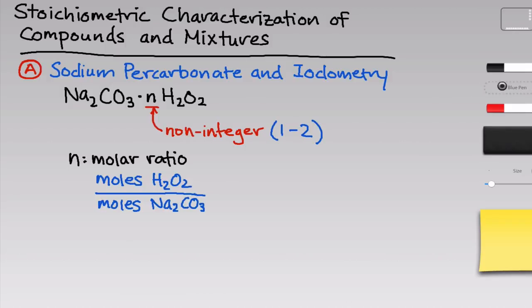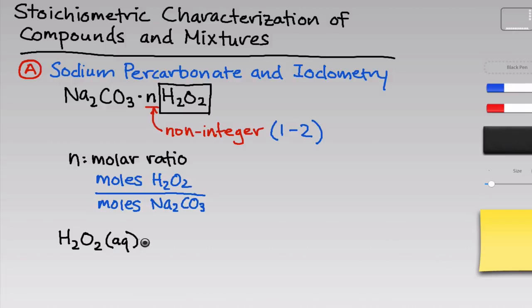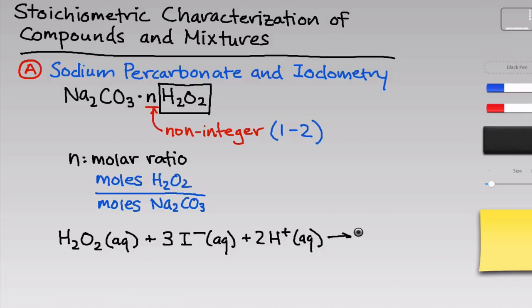To do this, we're going to take advantage of a specific reaction of the hydrogen peroxide component. When we dissolve sodium percarbonate in water, it separates into the sodium carbonate and hydrogen peroxide portions. The aqueous hydrogen peroxide that forms, when placed together with aqueous iodide (I-) and a strong acid such as H2SO4 (represented as H+), combines in a redox reaction to form water and an oxidized version of iodine called triiodide, or I3-.